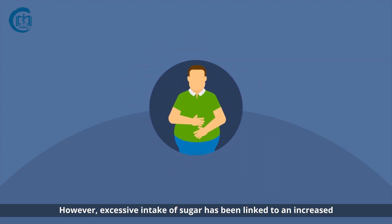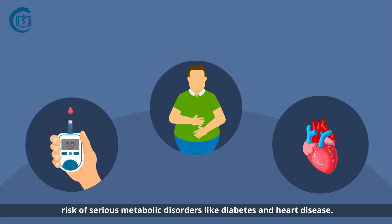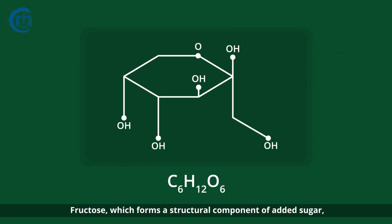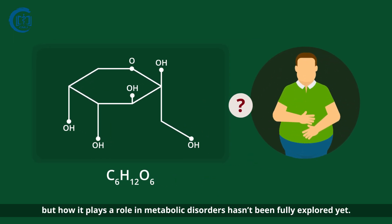However, excessive intake of sugar has been linked to an increased risk of serious metabolic disorders like diabetes and heart disease. Fructose, which forms a structural component of added sugar, has been shown to be detrimental for overall health, but how it plays a role in metabolic disorders hasn't been fully explored yet.